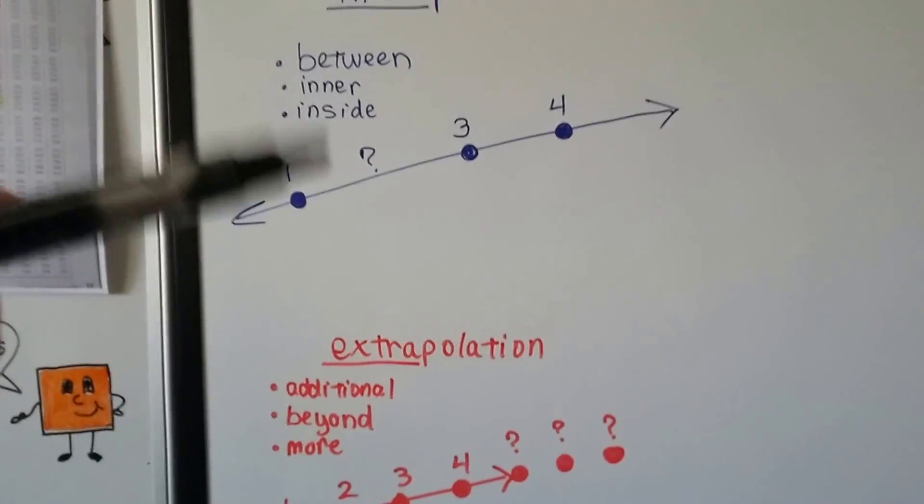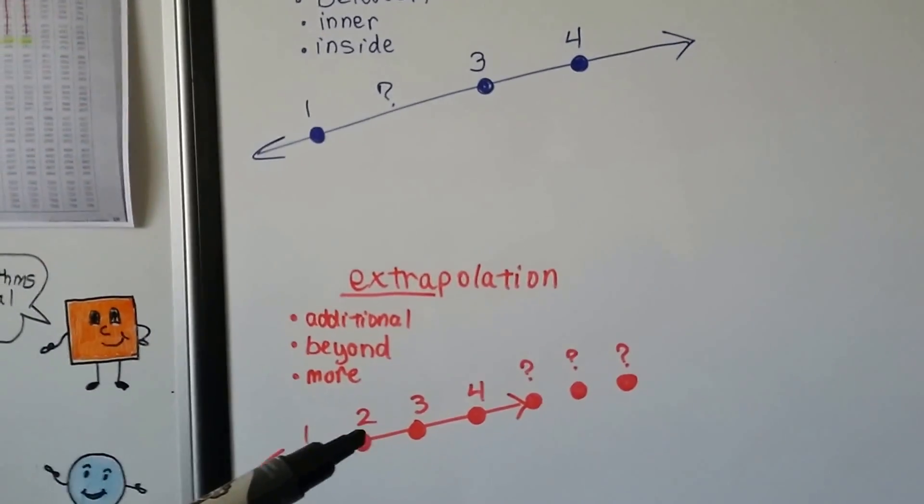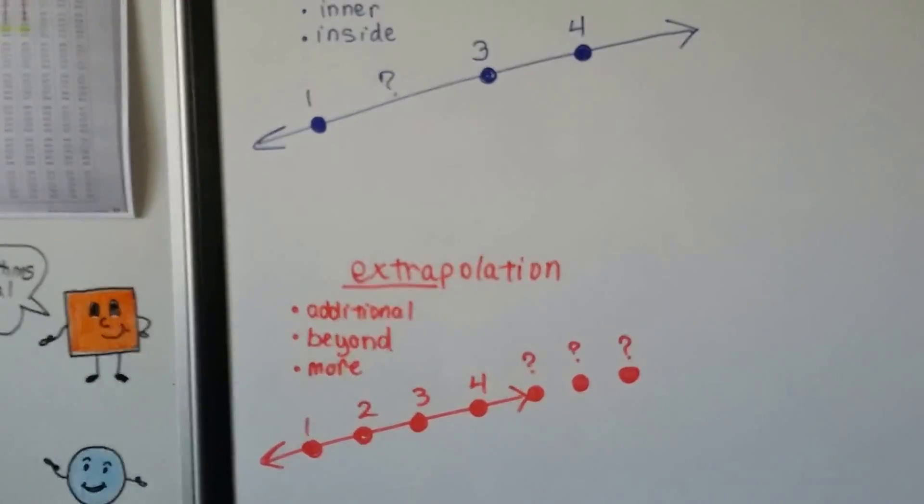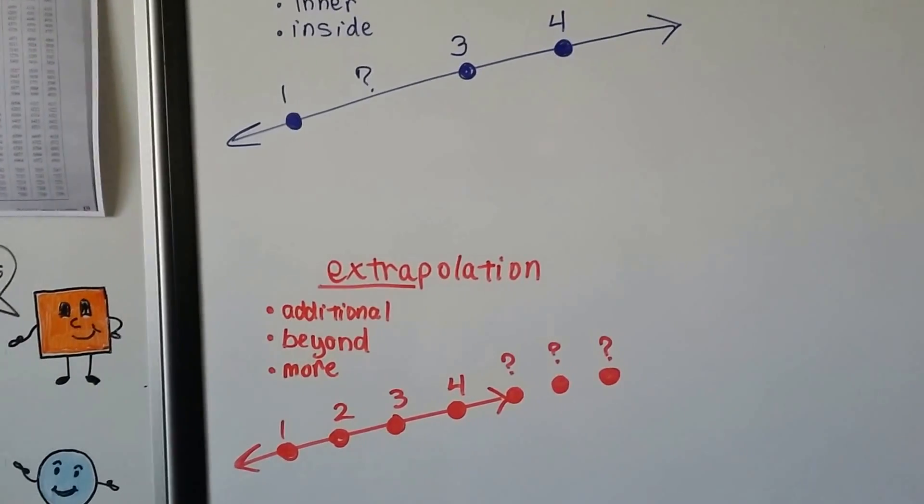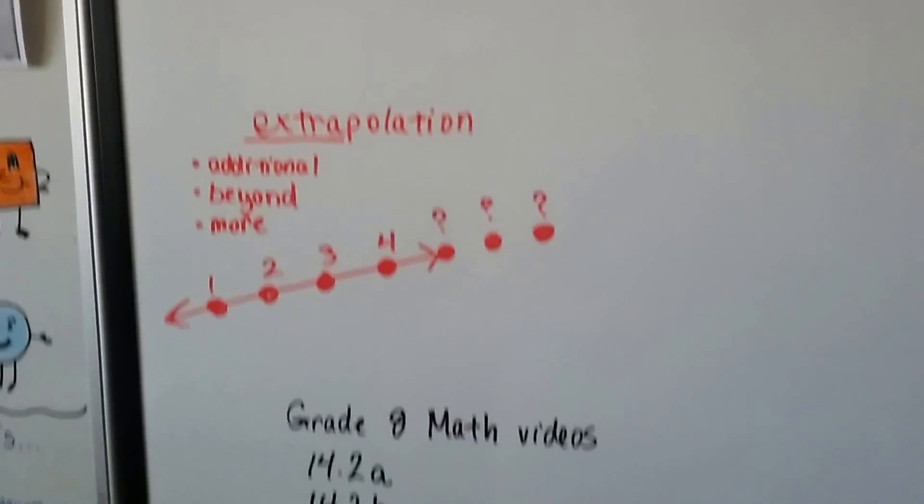So, to do interpolation, we're going to be finding values inside, and for extrapolation, we're going to be going outside of our given values. Doing like an estimated guess, or figuring it out, or using these values to help us do it. And, there's going to be links to those grade 8 math videos, 14.2a and 14.2b, where I discussed this.